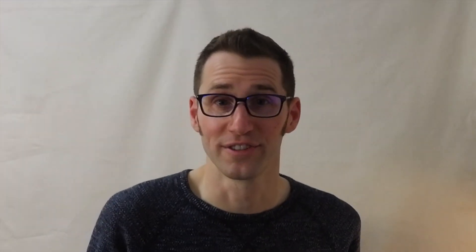These organisms have variable morphology, from sort of comma shape to corkscrew to very tightly coiled spirals. These organisms are all gram negative. Both of these organisms can be a challenge to grow, requiring specialized techniques. Campylobacter are microarophilic; they require nutritious media, so they really need blood. Some of them are able to grow at elevated temperatures as well, up to 42 degrees Celsius.